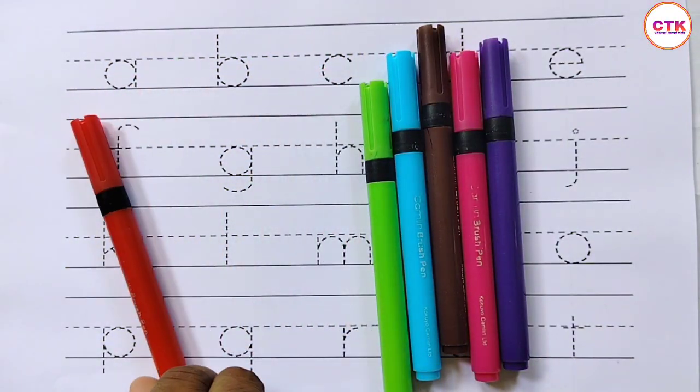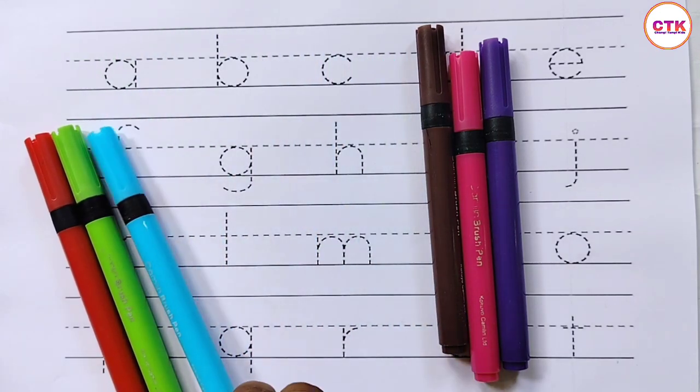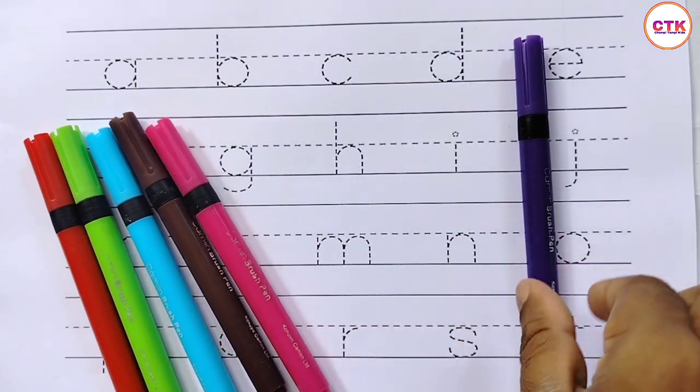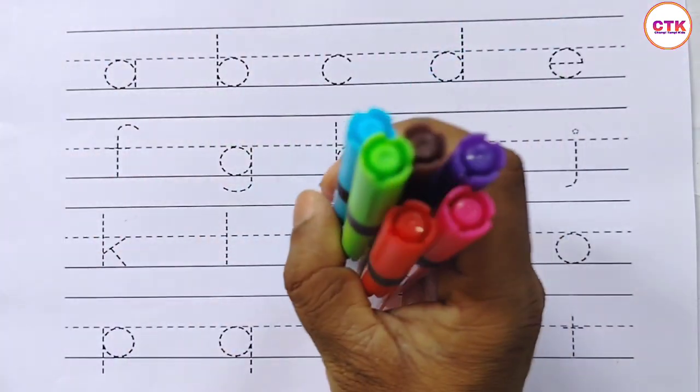Colors: red color, parrot color, sky blue color, brown color, pink color, and violet color. Let's learn the English alphabet.